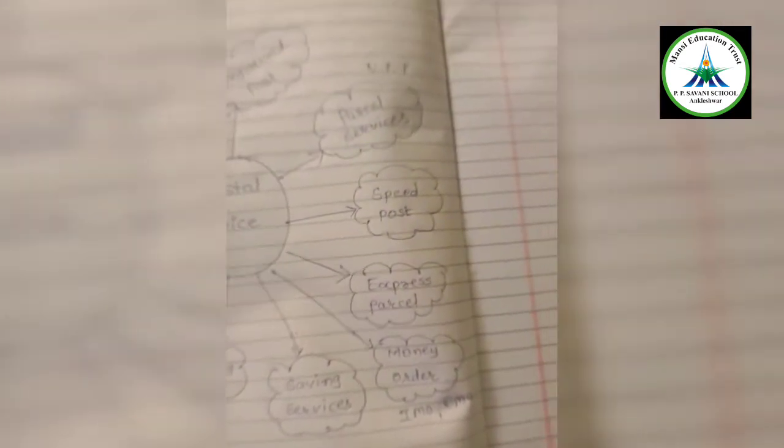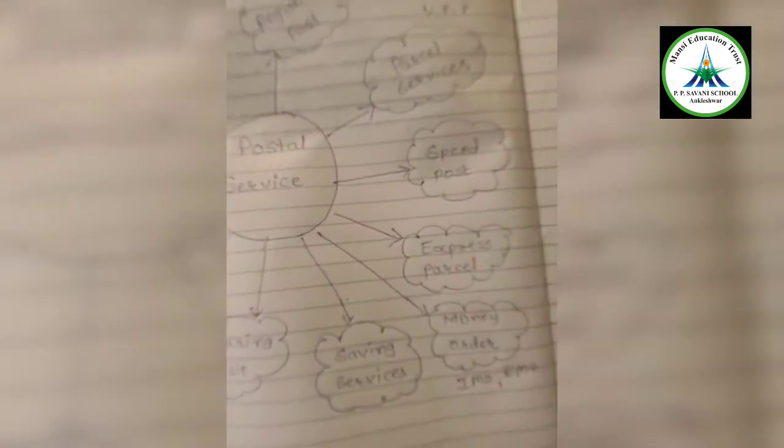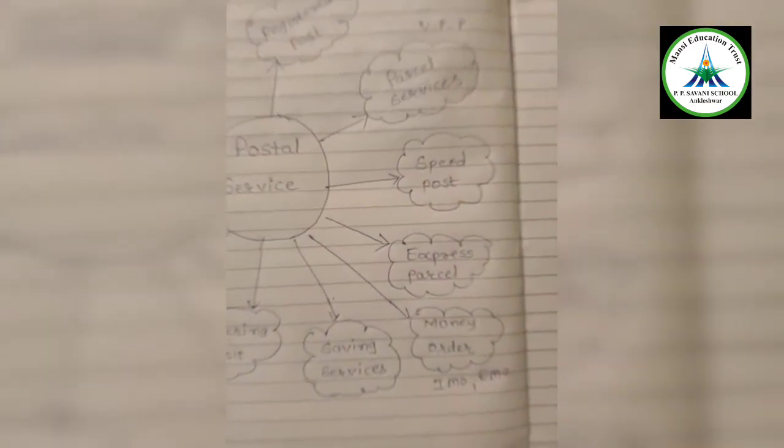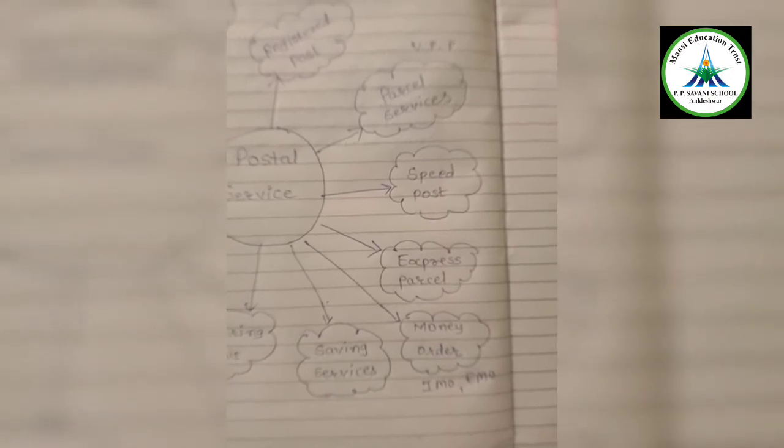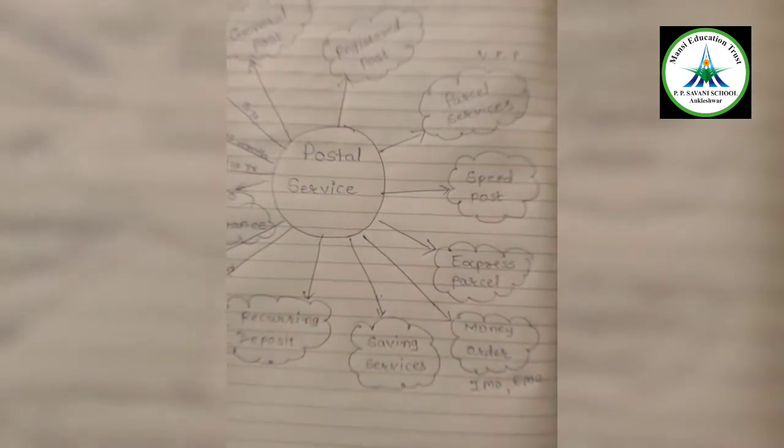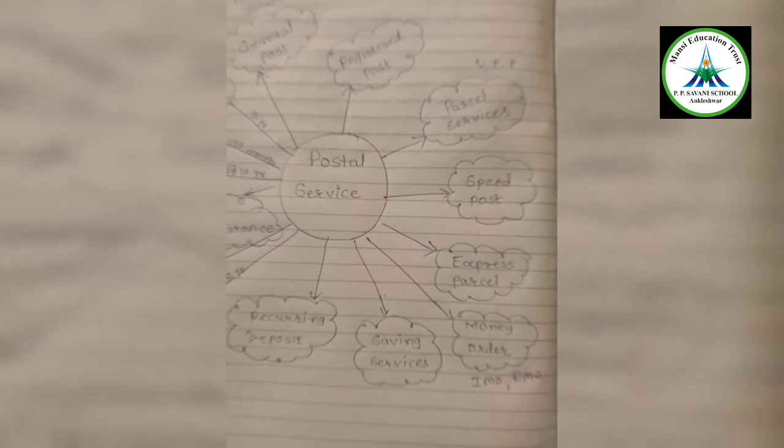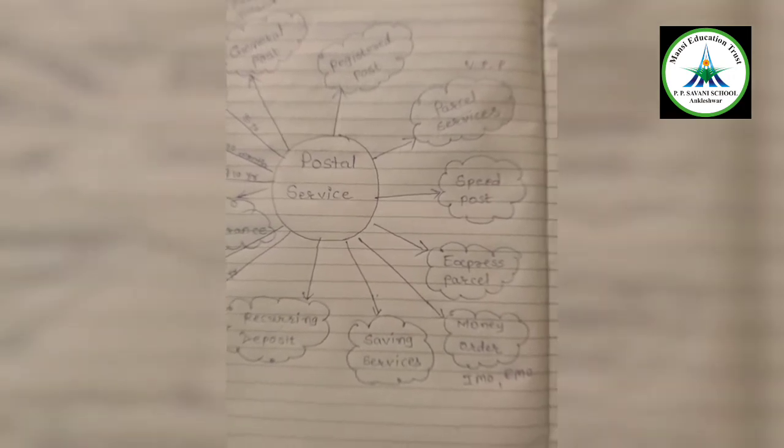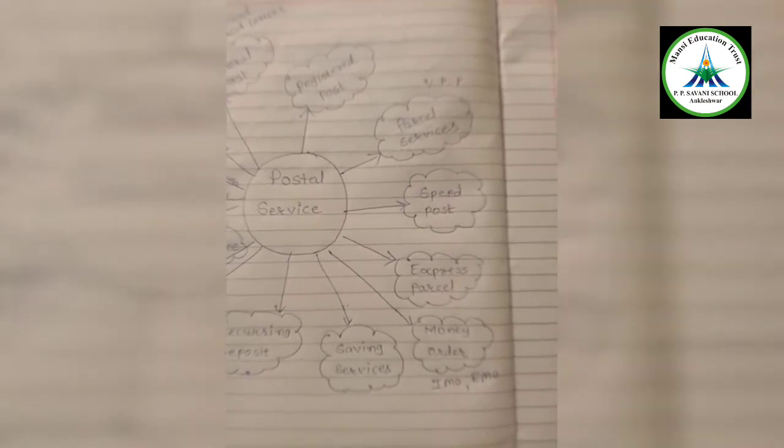Next is express parcel. Express parcel is more costlier than speed post. It is for individuals, departments, and business units. Express parcel is sent very speedily within the prescribed time limit. Postal department sends this either through air or any other fastest route and charges are higher than the speed post.